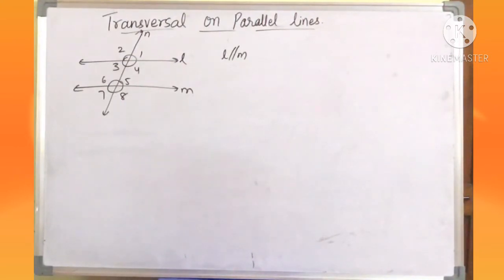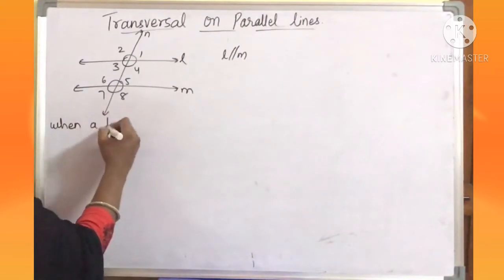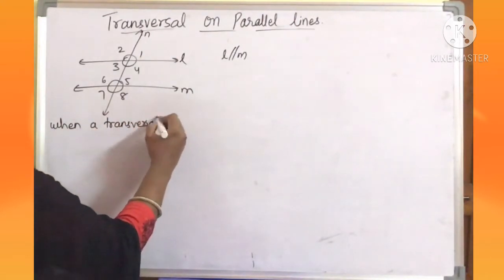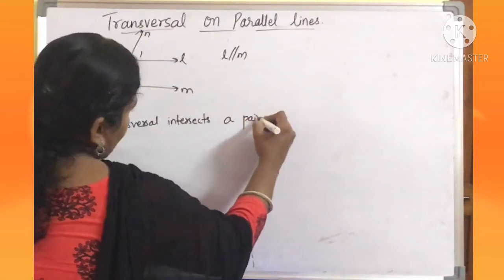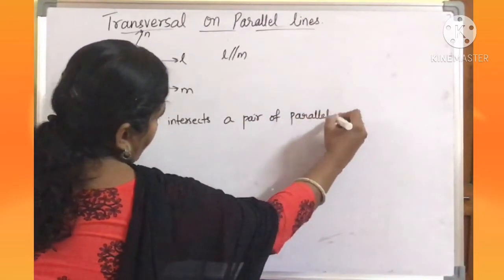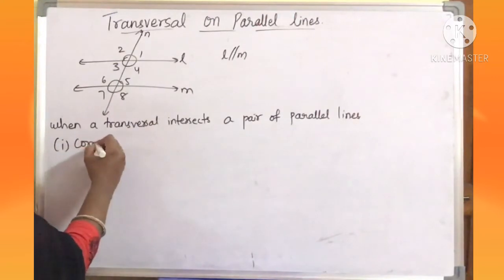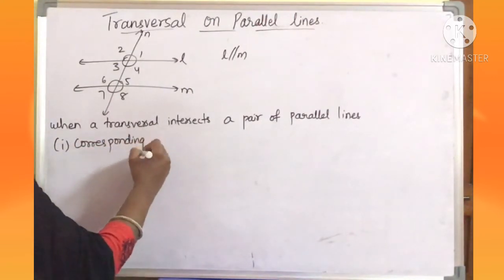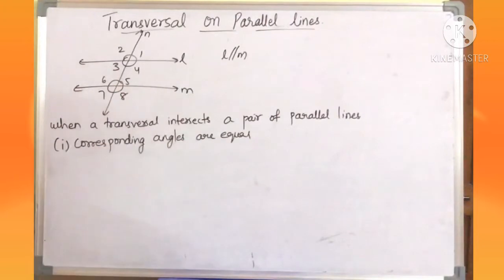Now in this case we see when a transversal intersects parallel lines, which angles are equal. Given L is parallel to M, when a transversal intersects a pair of parallel lines, we get that corresponding angles are equal. Each pair of corresponding angles are equal.